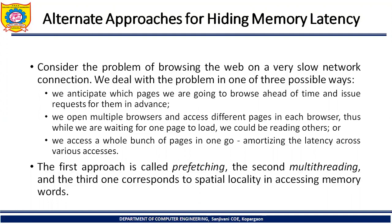Consider the problem of browsing the web on a very slow network connection. We deal with the problem in one of three possible ways. First, we anticipate which page we are going to browse ahead of time and issue requests for them in advance. Second, we open multiple browsers and access different pages in each browser — thus, while we are waiting for one page to load, we could read others. Or third, we access a whole bunch of pages in one go, amortizing the latency across various accesses.